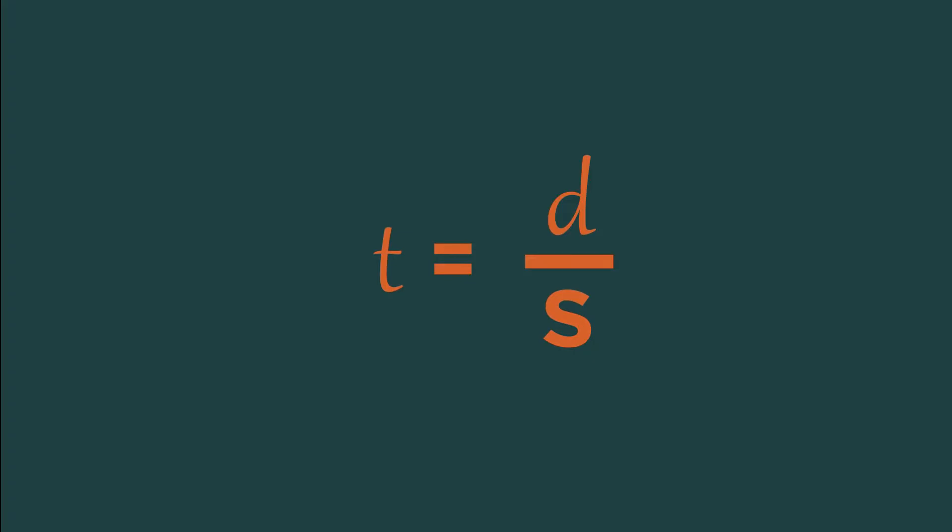It means we can rearrange a formula so that a different variable becomes a subject. The subject is the letter that's on its own on the other side of the equals sign. So now t is the subject.